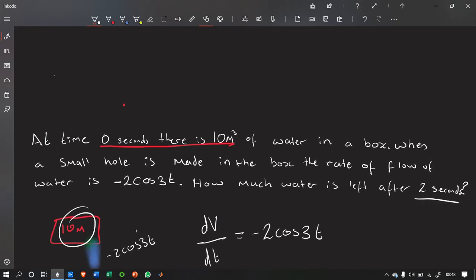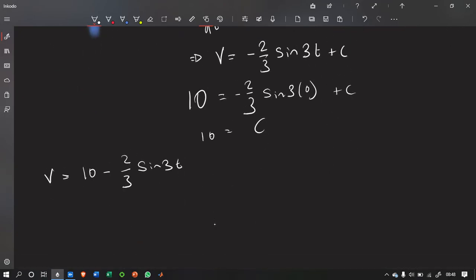Now, it wants us to find out how much water there is after 2 seconds. So, all we do for that one is substitute 2 into t. So, we get v is equal to 10 minus 2 over 3 sin 3 times 2. And that gives us v is equal to 10 minus 0.188. Which gives us the answer of v is equal to 9.812. We found it.